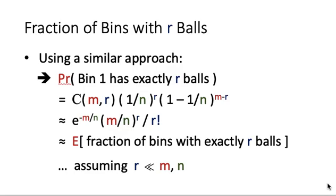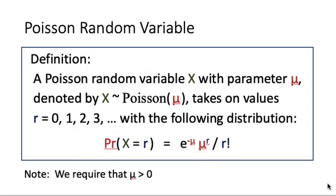So this term, when we have r here, will be e to the power minus the expected value, multiplied by the expected value to the power r, divided by r factorial. This form gives us the motivation to study the Poisson random variable. Suppose that x is a Poisson random variable with parameter mu.